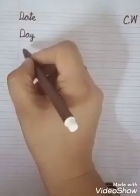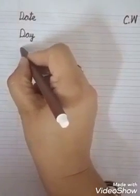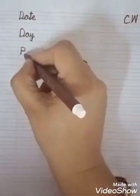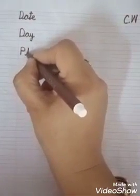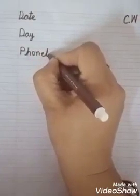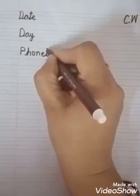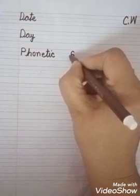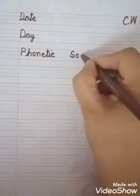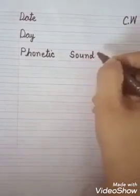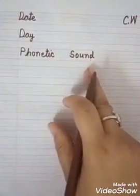Now, here, write down 'Phonetic Sound'. First letter should be capital P, then H, O, N, E, T, I, C — Phonetic. Then leave some space and write down capital S, O, U, N, D — Phonetic Sound.